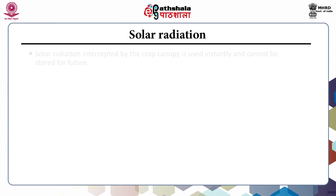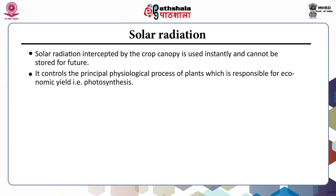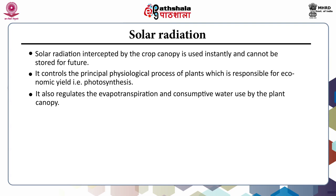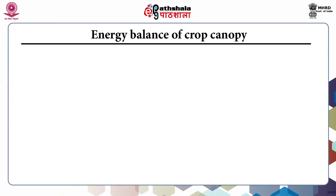Solar radiation as intercepted by the crop canopy is used instantly and cannot be stored for future use. It controls the principal physiological process of plants responsible for economic yield, that is photosynthesis. It also regulates evapotranspiration and consumptive water use by the plant canopy. The angle of incidence of solar radiation, spectral composition, and the ratio of diffuse to direct radiation intensity are important factors for crop growth and yield.